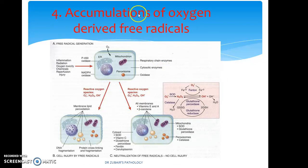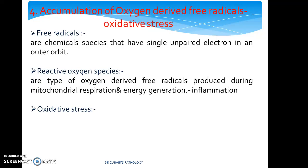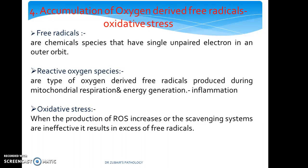The fourth important mechanism is accumulation of oxygen-derived free radicals. These free radicals can be released from inflammation, radiation, oxygen toxicity, chemicals, and reperfusion injuries. They are of different types: O2, H2O2, and OH — they have an unpaired electron. Free radicals are chemical species that have a single unpaired electron in an outer orbit. Reactive oxygen species are a type of oxygen-derived free radical produced during mitochondrial respiration and energy generation, such as in inflammation. Oxidative stress occurs when the production of reactive oxygen species increases or scavenging systems are ineffective, resulting in excess free radicals. In a nutshell, free radicals can cause membrane damage.